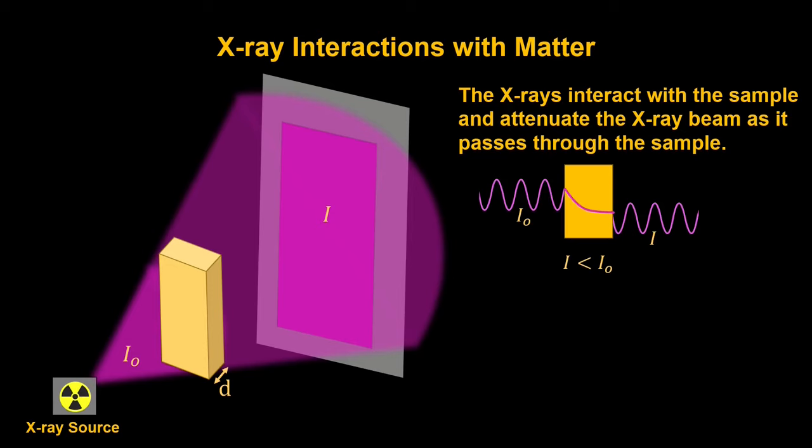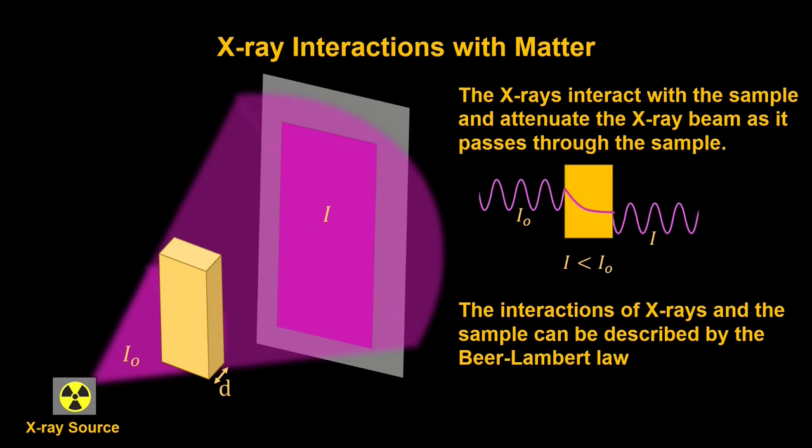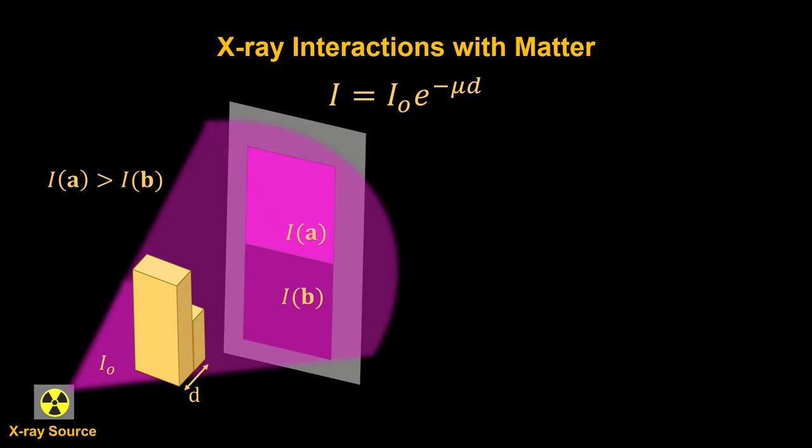I have it drawn here in a simpler diagram where you have I₀ coming in as a wave, and then an exponential decay, and then you have another wave coming out as I. The relationship between the intensity of the detector and the initial intensity, and thus the interactions of X-rays with the sample, is described by the Beer-Lambert law. I is equal to I₀ multiplied by e to the power of negative μd, where μ is the attenuation coefficient, or the strength at which the material can interact with the X-rays.